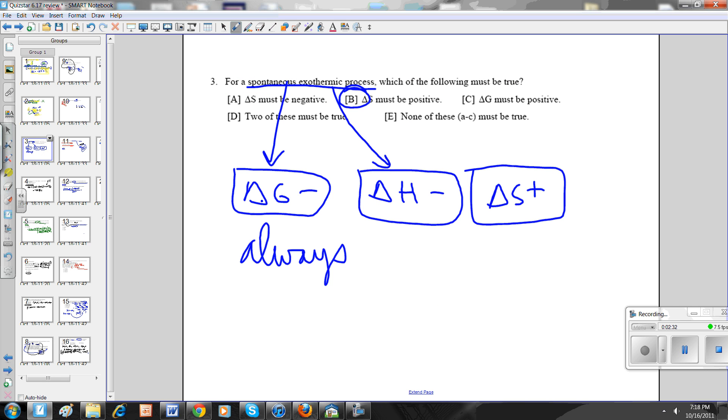Question number three. They ask you for a spontaneous exothermic process. As soon as they tell you it's spontaneous, you should know that that means delta G is negative because we learned that when we started talking about thermodynamics. Exothermic, you should know that delta H is also negative. And they say what you're the following must be true. Since they don't tell you a temperature, it can't be one where the signs are the same.